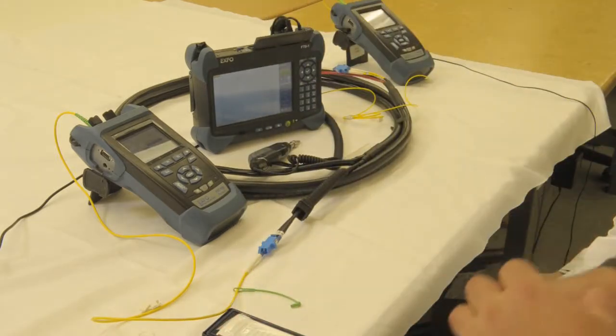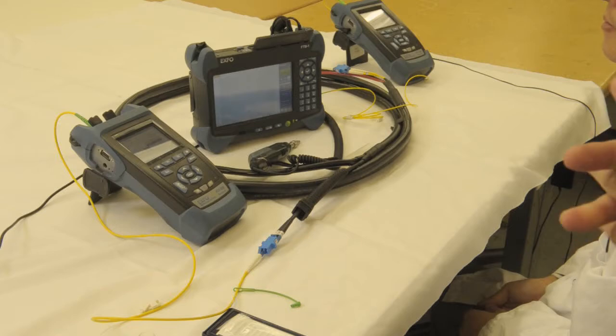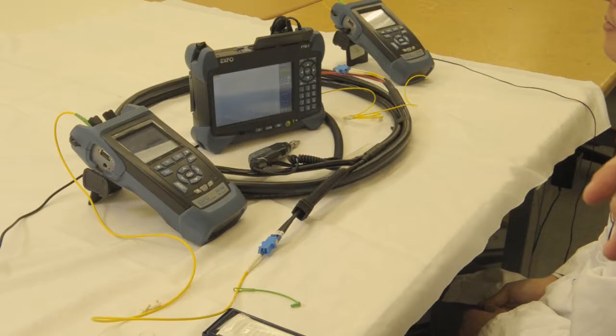The current requirement internally to Alliance now is 0.35 per mated pair and 46 on return loss. So these are well within specification. That's the basic steps for insertion loss and return loss testing.